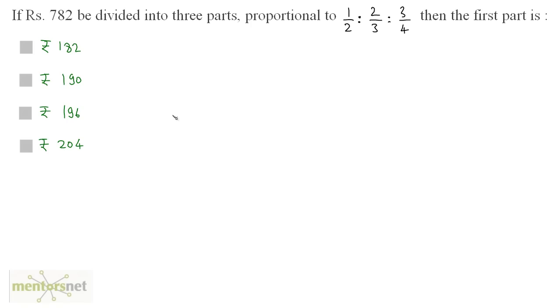If Rs.782 is divided into three parts proportional to 1/2 : 2/3 : 3/4, then what is the first part?